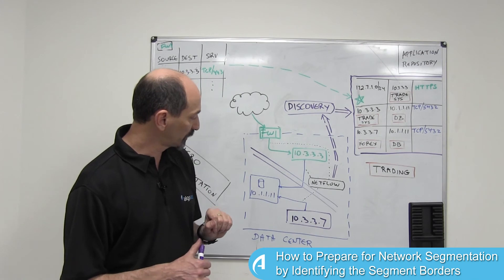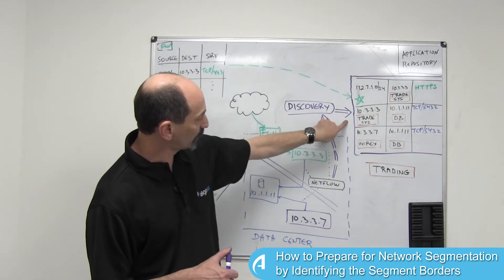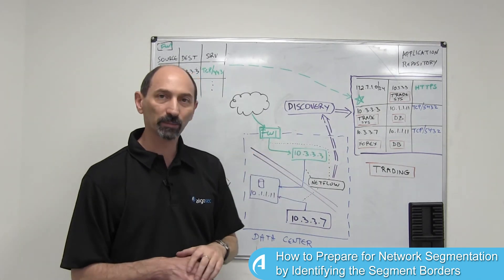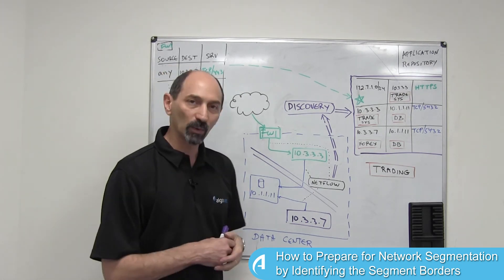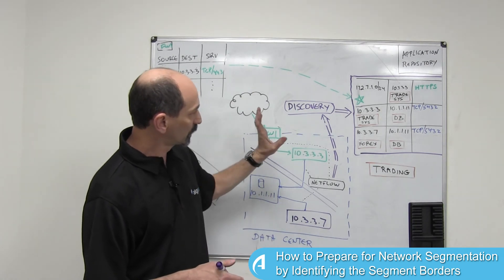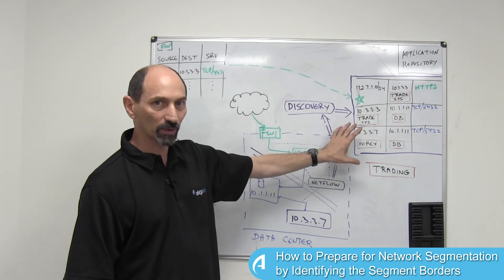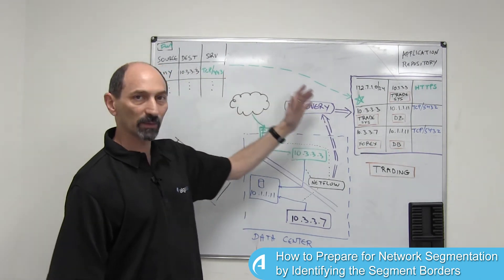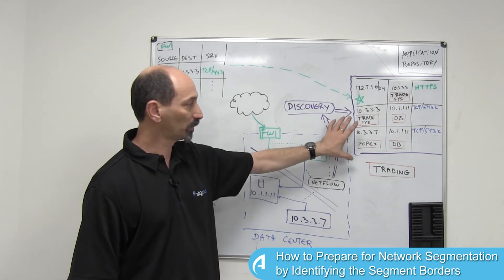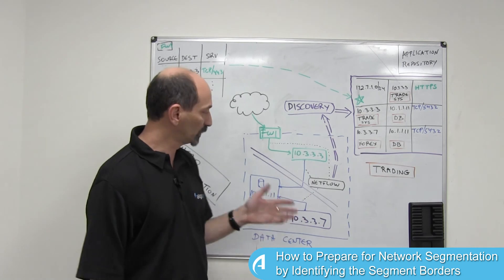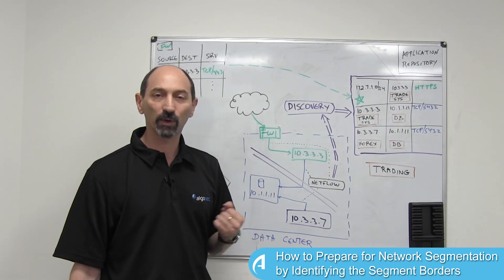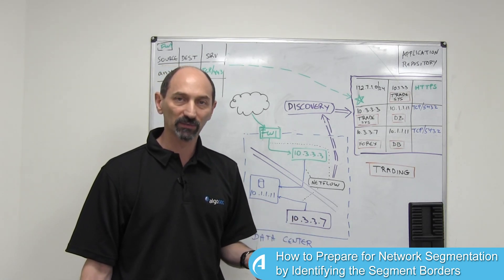In the example sketched here, the flow in the middle crosses the purple line and therefore would need a new rule added to the purple filter. The key takeaway is that if you use your discovery system to identify the flows and combine that with information from the firewalls — recognizing which flows are already going through a filter and which are completely unfiltered — this can assist you greatly when deciding where to put the boundaries on your new micro-segments and which policies you need to put in those newly defined filters.